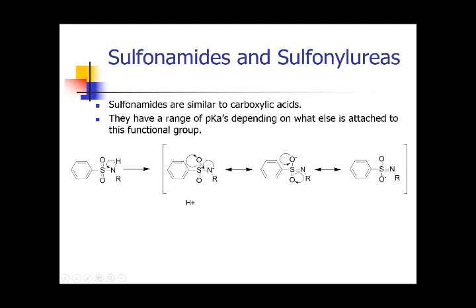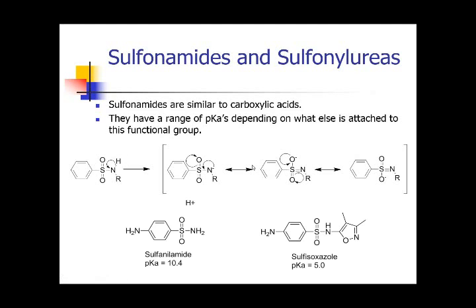The sulfonamide nitrogen is an acidic proton, however it is not super acidic. For the simplest sulfonamide, you have to bring the pH all the way up to 10 for it to lose its proton. However, just like every other functional group, it will be affected by neighboring functionalities and electronics. An additional moiety causes a drastic decrease in pKa value from 10 to 5. Remember, this is a log scale — so that molecule is 10,000 times more acidic than the simple sulfonamide. There is a huge range, and you should always be aware of that.